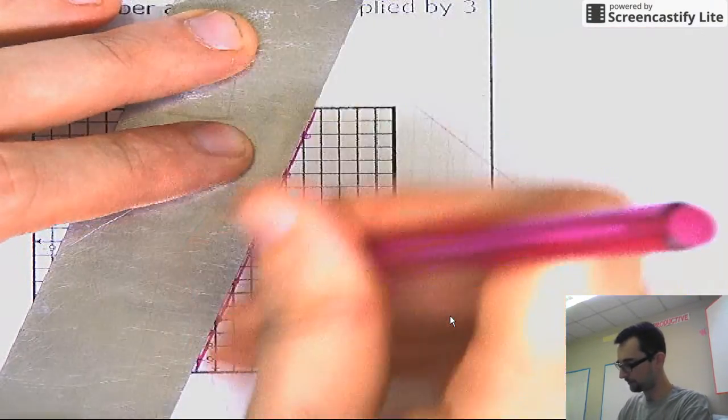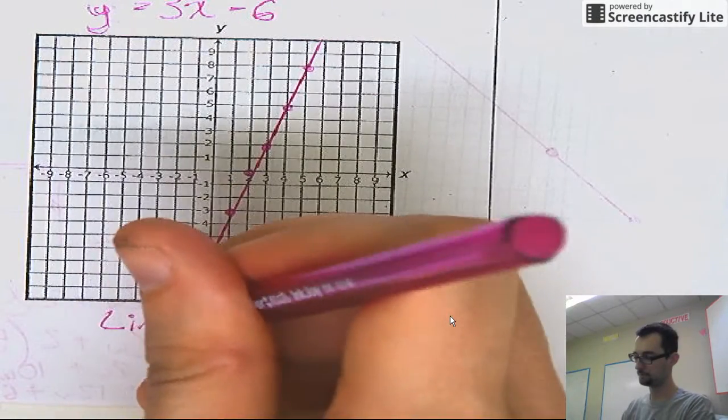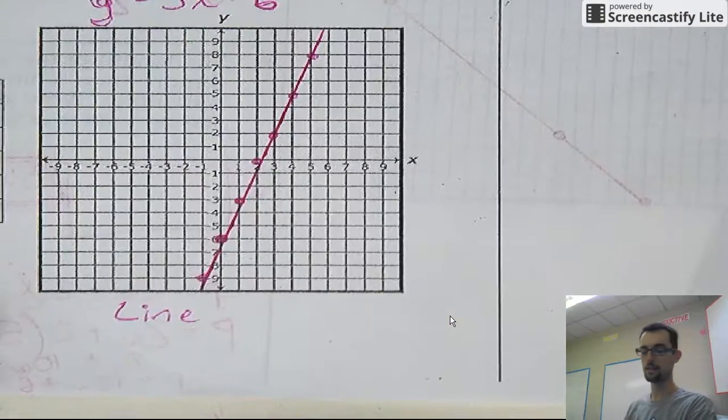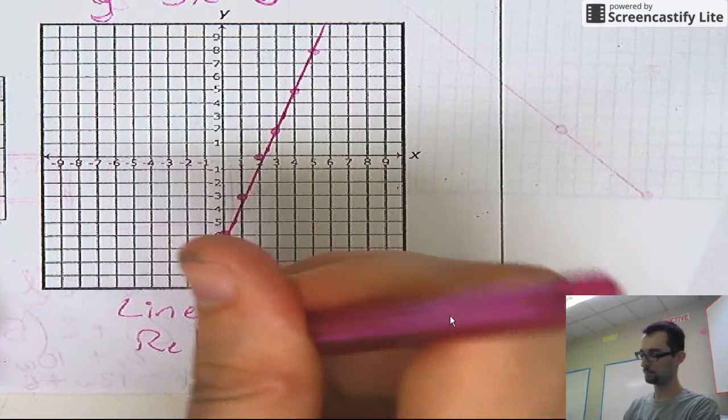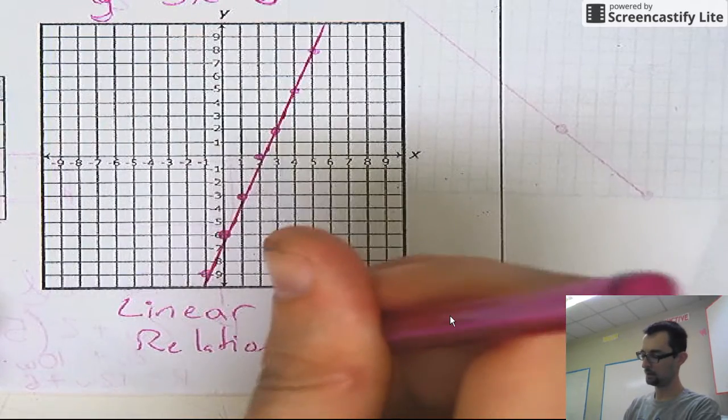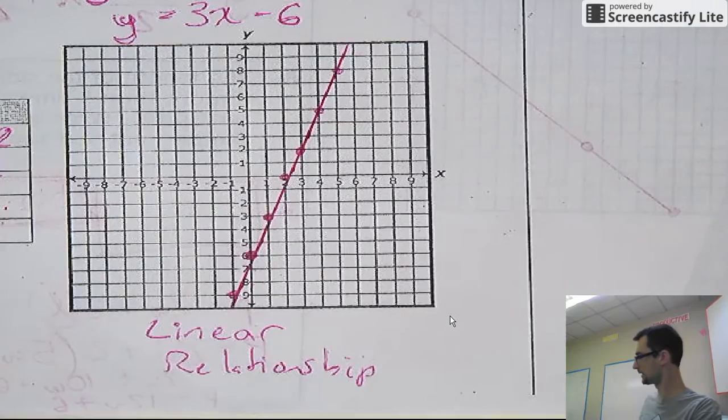Which, if you'll remember from, we've talked about this before. This makes a line. Right? Which means this is a linear relationship. All right. One thing, because it's only been six minutes. You don't have your attention for another couple of seconds.